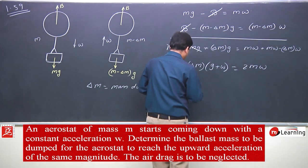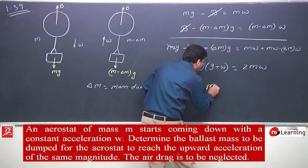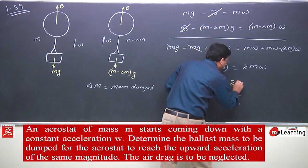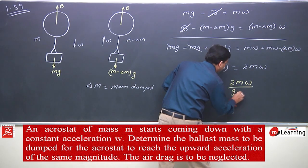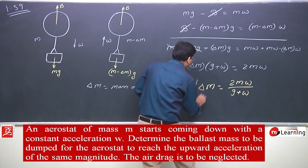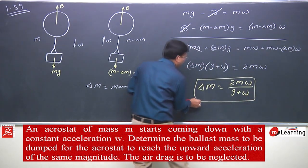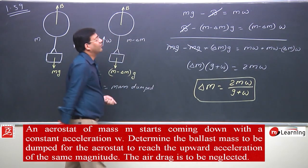The mass to be dumped is delta m equals 2mw divided by (g + w). This mass must be dumped off the aerostat.